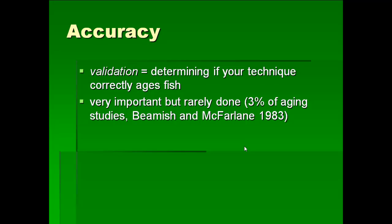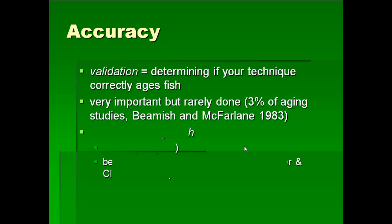Validation is very important — it makes sense to know if your technique is giving you the correct age — but it's very rarely done. In a study by Misson McFarland, only 3% of the aging studies they looked at actually checked the accuracy. That's extraordinarily low given its importance. Why don't we check accuracy more often? It's very difficult and often not possible. To check accuracy, you've got to have a known-age fish — a fish whose age you know independent of aging with hard parts or whatever technique you're using.